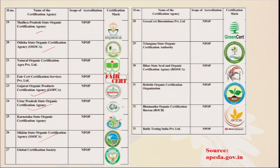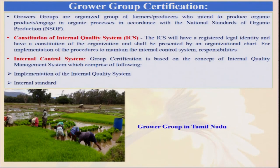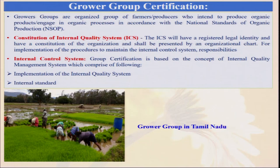A particular farmer must choose the appropriate certification body for their area — for example, a farmer in Gujarat can approach the Gujarat State Organic Certification Agency. The certificate will include a certificate number, company name and address, and whether you are following the National Programme for Organic Production standard or the National Organic Program technical standard of the USA. After the initial certification date and scope certification, you will ultimately get certified. Grower group certification: not always individual farmers go organic; sometimes people form a cluster or group and want to convert a larger area compared to a small individual farm.